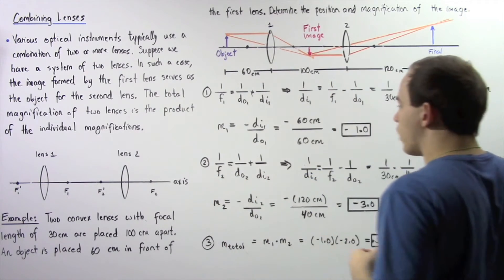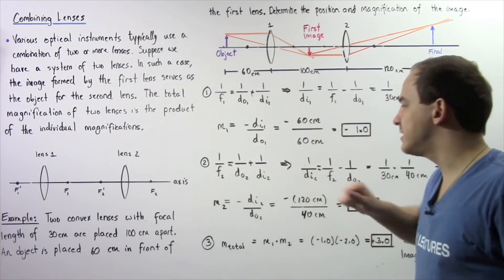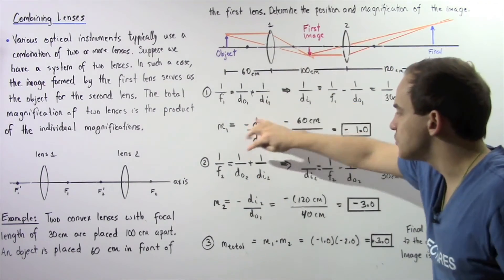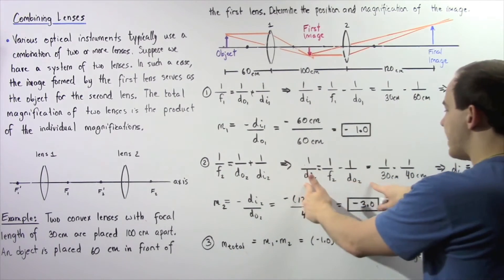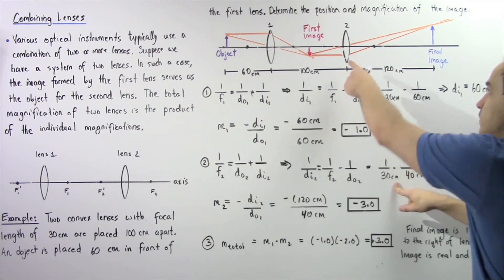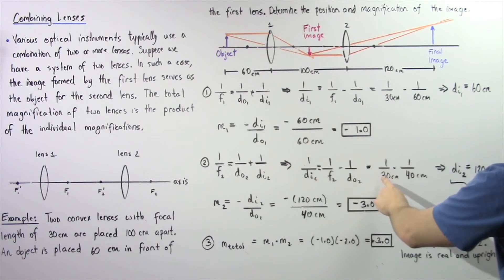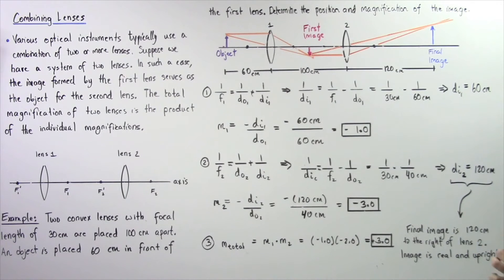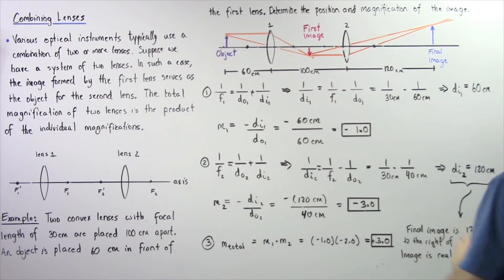We apply the thin lens equation once more: one divided by the focal length of lens two equals one divided by the object distance for lens two, which is 40 centimeters, plus one divided by the image distance of lens two. Rearranging, we get one over 30 minus one over 40, which gives us 120 centimeters. The focal length of lens two is positive 30 centimeters because it is a convex lens, and the object distance is 40 centimeters. Our final image distance from lens two is 120 centimeters, as shown in the following diagram.